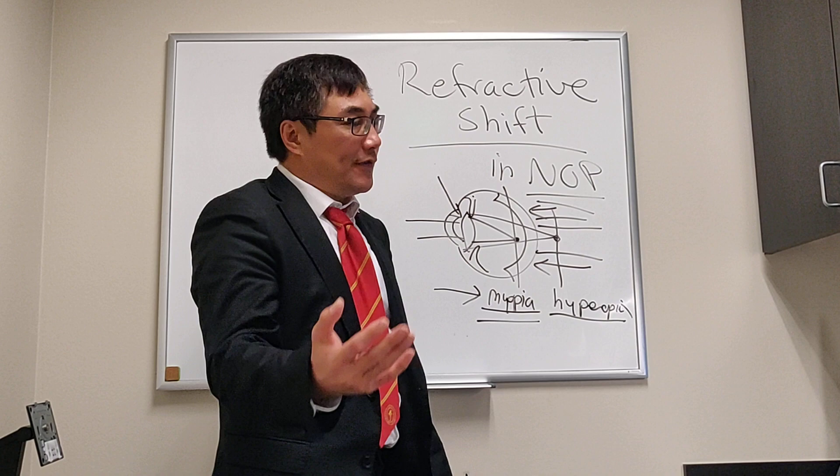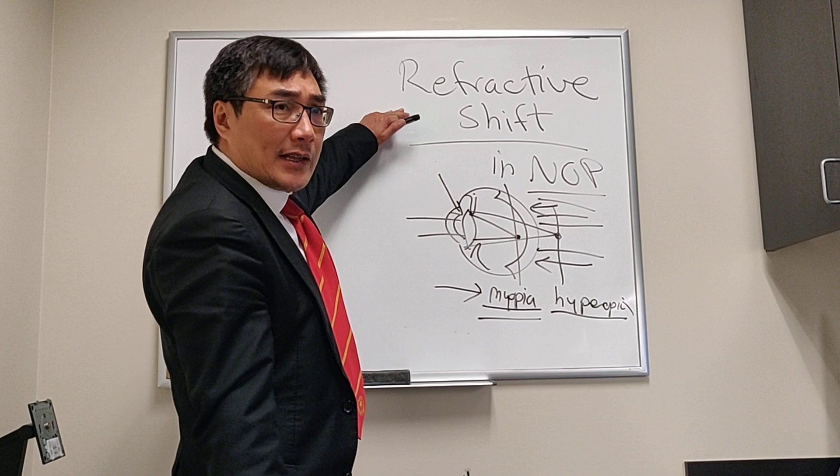In summary, you need to know about refractive shifts in neuro-ophthalmology producing transient myopia or transient hyperopia. The source can be either the front of the eye — the lens — or the back of the eye, including the choroid and the space under the retina.